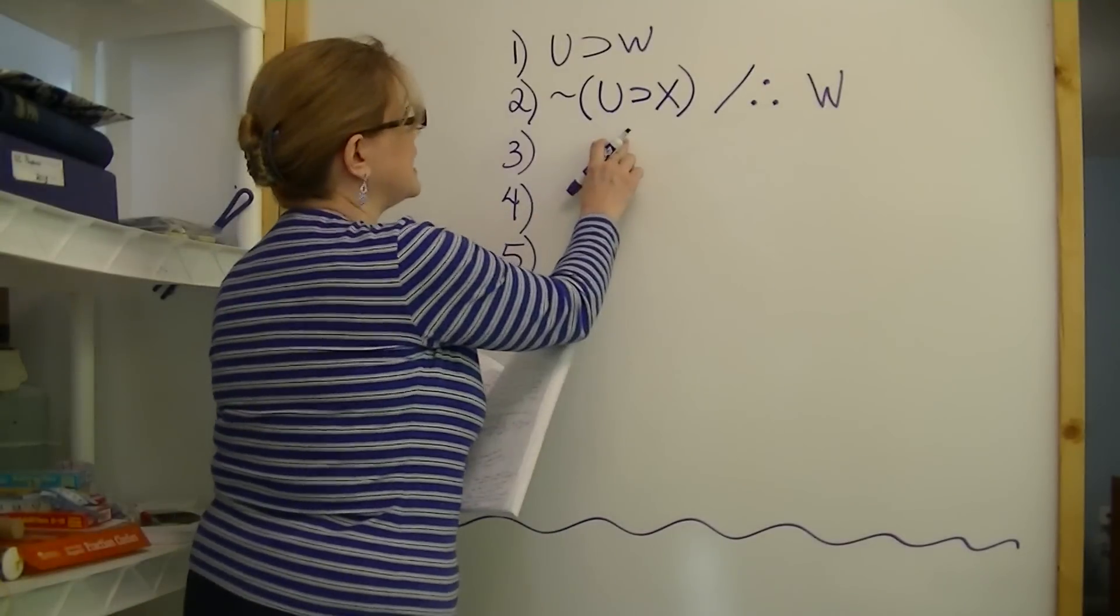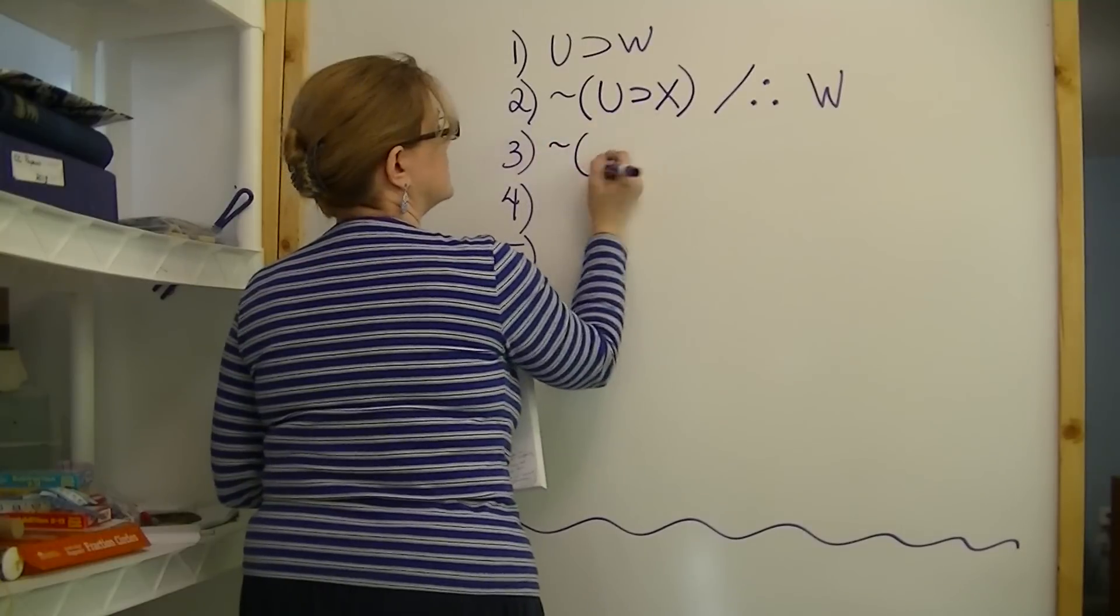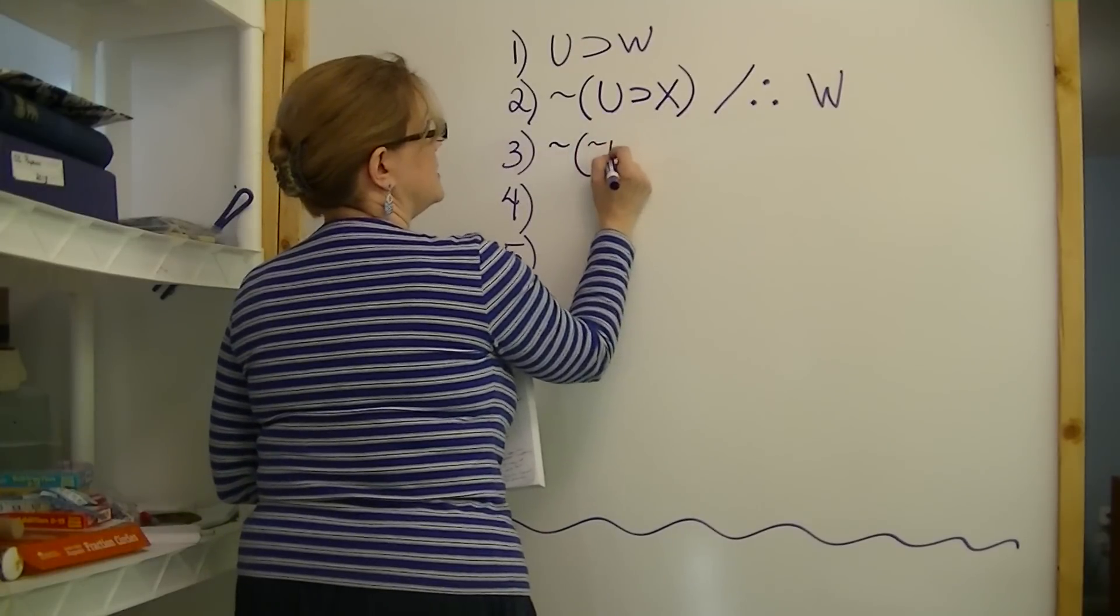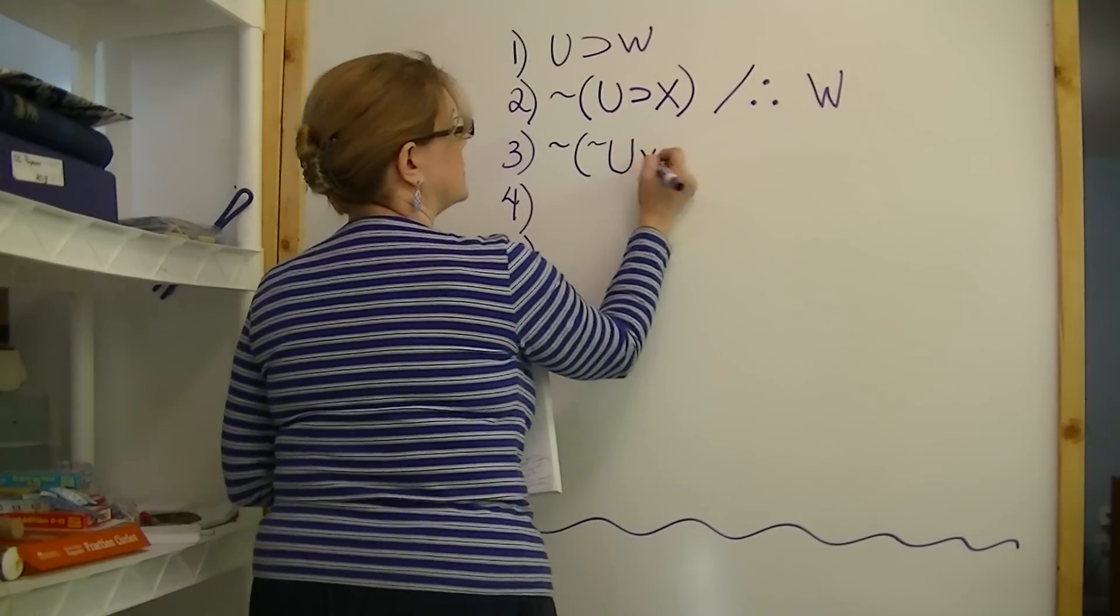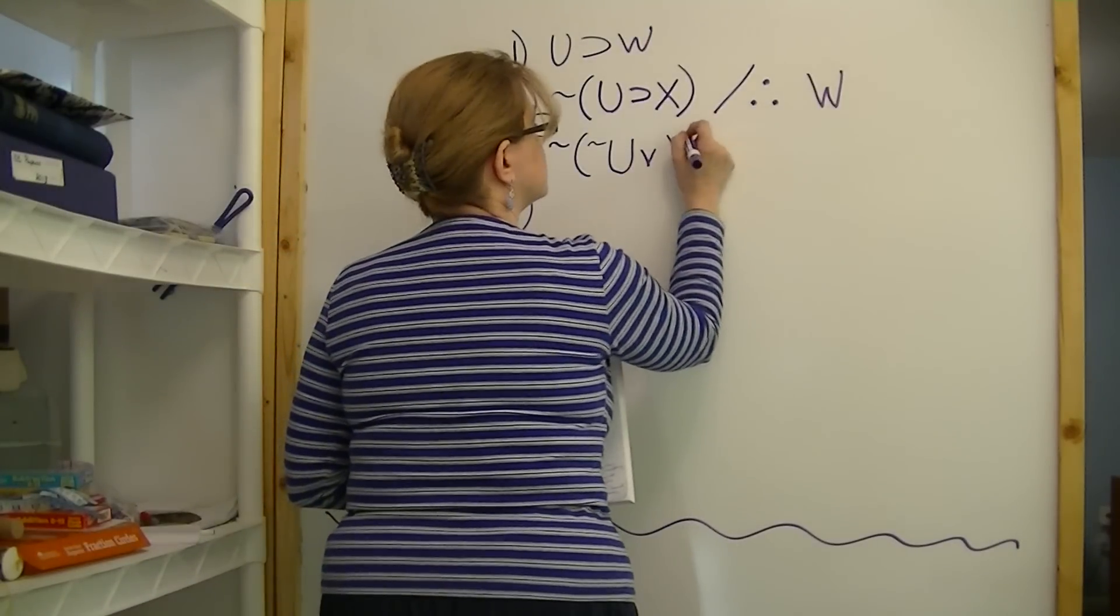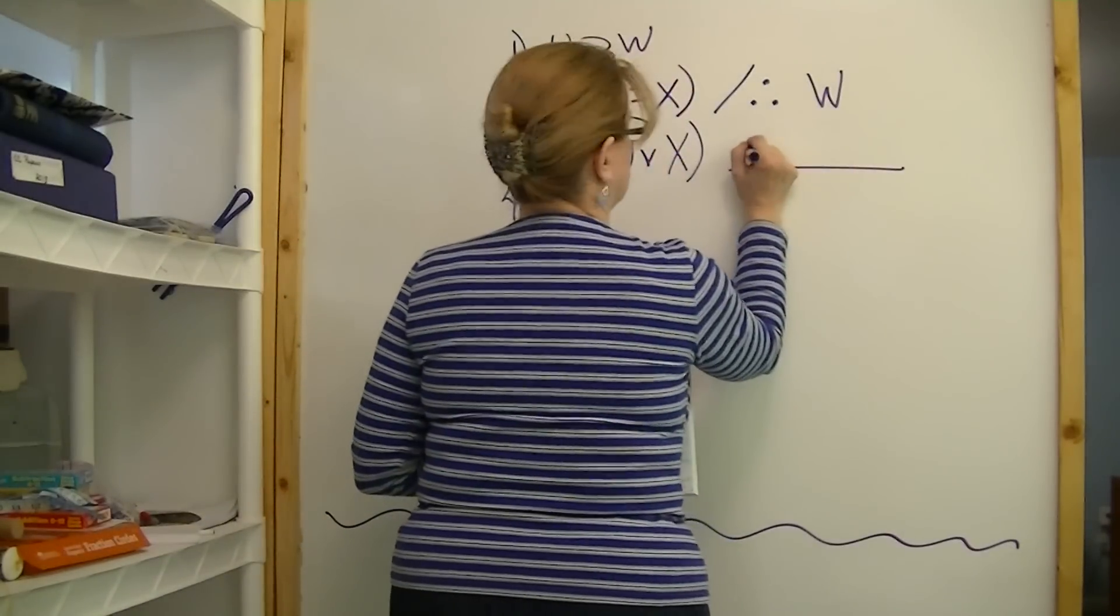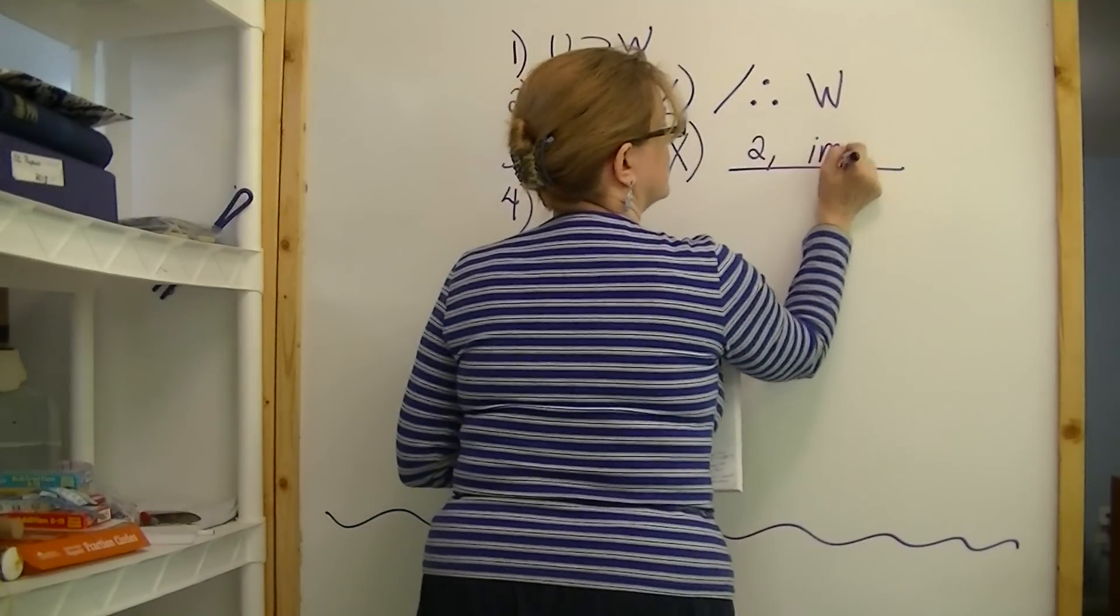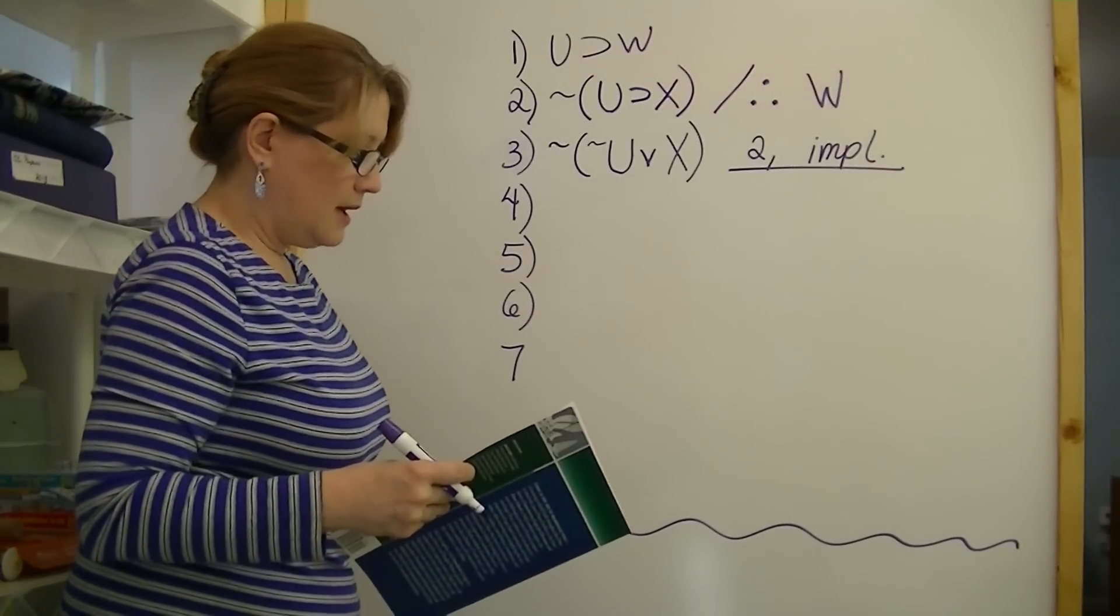So let's take a look at it. So if we do use implication for that intermediate step, then it would look like not, it was before, that was there before. So what I'm changing is I'm negating the U, the first constant in this, changing the if-then to an or, the conditional to a disjunction, and X. And that was using line two and performing a material implication on it, changing if-then to an or.